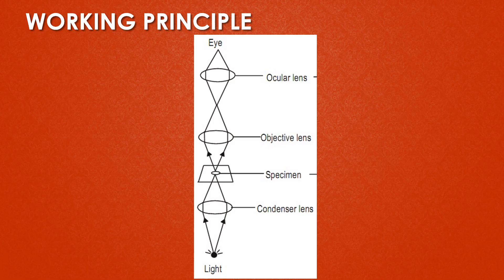This is the working principle and the flowchart of the bright field microscope. First is the light source. The light from the light source is aimed towards the lens beneath the stage, called the condenser lens. This condenser lens condenses the white light and passes it to the specimen. From the specimen, the light passes through the objective lens, then to the eyes through the second magnifying lens called the ocular lens or eyepiece, and finally we visualize the image of the given specimen.